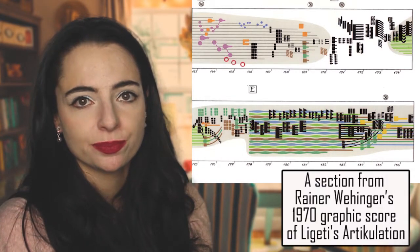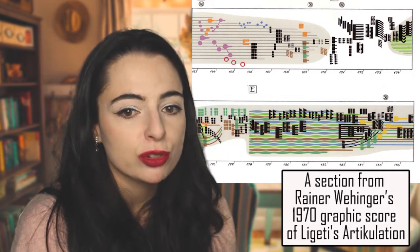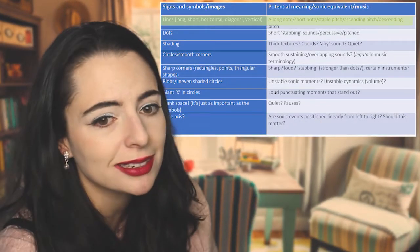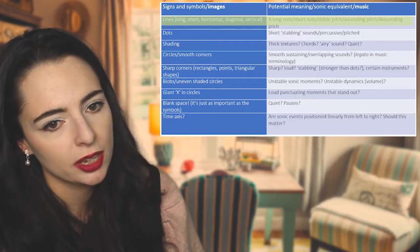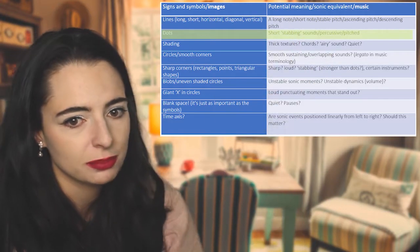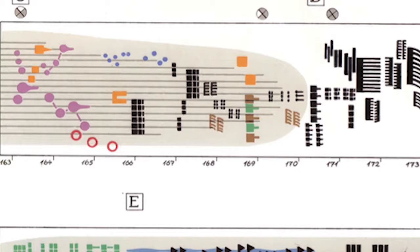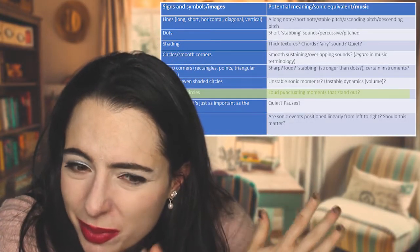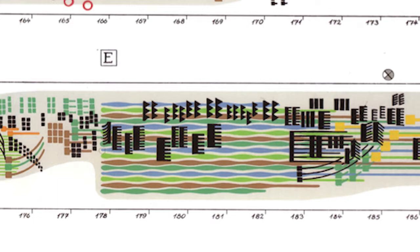The score has a time axis. Looking at it, what signs and symbols do we notice, and what could they represent sonically? There's no right or wrong answer. For example: lines — long, short, diagonal, vertical — could mean long or short notes, stable pitch, ascending or descending pitch. Dots could be short, stabbing percussion, perhaps pitched. Shading and thick textures could suggest chords or airy, quiet sound. Smooth corners could be smooth, sustaining, or overlapping sounds; sharp corners could be stabbing sounds. The giant X in circles could represent loud, punctuating moments, and blank space could mean quiet pauses.